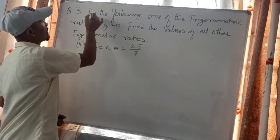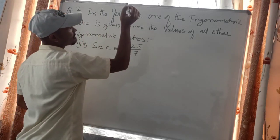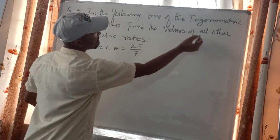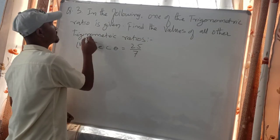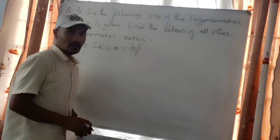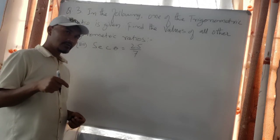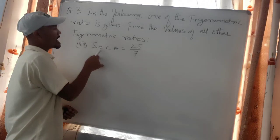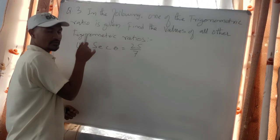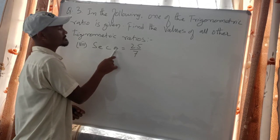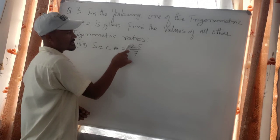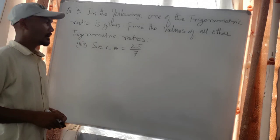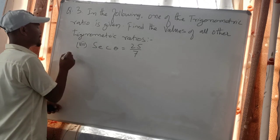In the following problem, one of the trigonometric ratios is given; find the values of all other trigonometric ratios. It is given that sec θ equals 25 by 7.